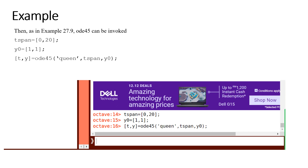After creating the M-file, go to the command window and insert all the commands. Set the tspan — this is the range, from t=0 to t=20. For y0, put the initial values: y1=1 and y2=1. Then type the ODE45 command carefully. Don't leave any extra spaces and make sure you use the right brackets. If you type it precisely, you can run the code successfully.